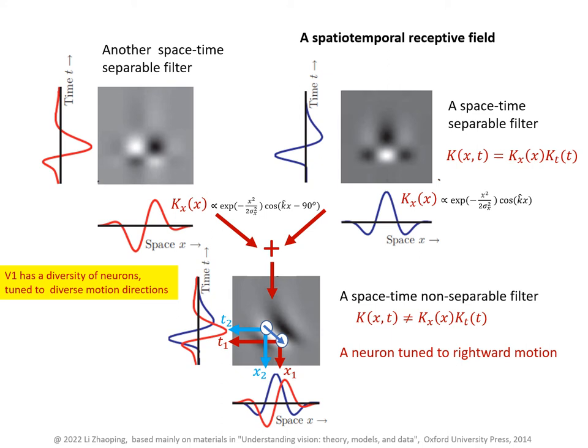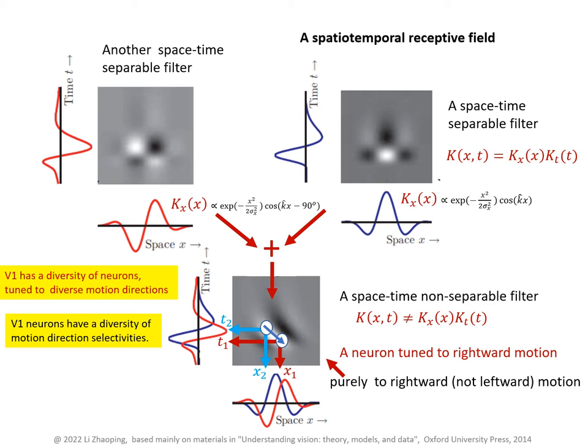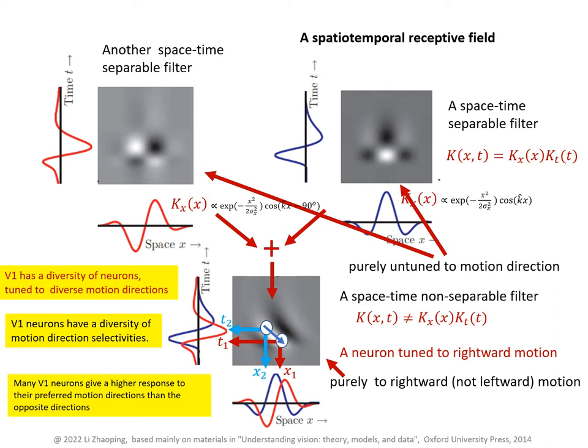V1 has many motion-direction-selective neurons, each preferring one particular motion direction over the opposite direction. Some V1 neurons are more sensitive to motion direction than others — for instance, one may have a very strong preference for one direction, while two filters that respond equally well to leftward or rightward motion show no selectivity. Many V1 neurons are in between these two extremes, responding somewhat more strongly to their preferred direction than the opposite.